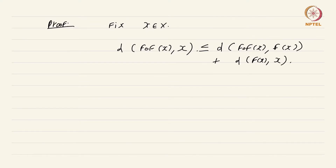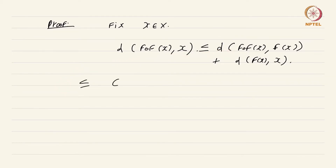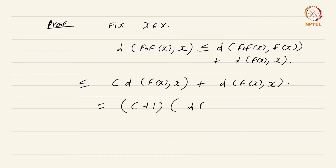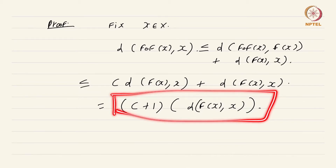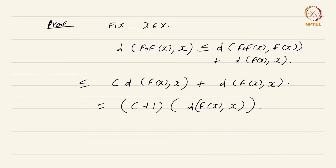The reason for this is that we need this term to use the hypothesis that f is a contraction; we cannot write it in terms of f⁻¹(x) simply because f need not be invertible. Now that we have this, the first term simplifies: this is less than or equal to c·d(f(x), x) plus d(f(x), x), which equals (c + 1)·d(f(x), x). So d(f²(x), x) ≤ (c + 1)·d(f(x), x).